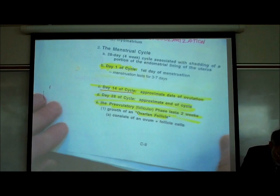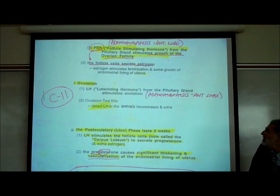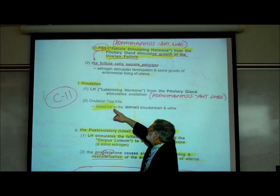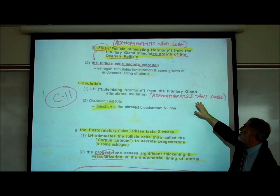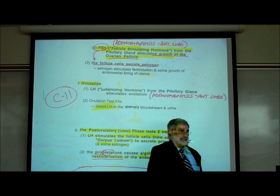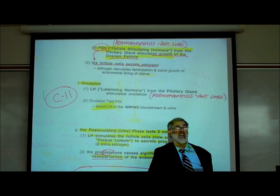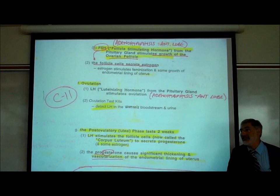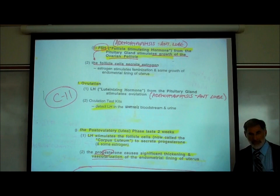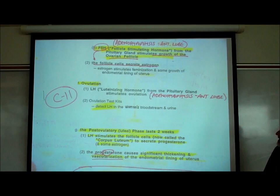LH is what causes the egg to pop out of the ovarian follicle. The egg pops out into the fallopian tube — that's where a woman can get pregnant. The egg is fertilized in the fallopian tube, if it's going to be fertilized at all. After the egg pops out, we call the next two weeks — day 14 to 28 — the post-ovulatory phase. 'Post' means after, so it's the post-ovulatory or luteal phase, lasting about two weeks.